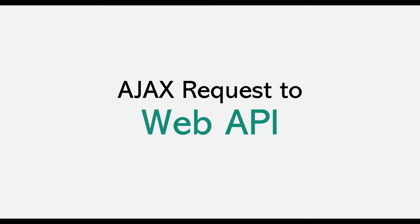In the last lecture, we learned how to make an AJAX call to request some data from a server asynchronously using the XMLHttpRequest object. The data which we requested was present in the same server where our web project resides. We requested data from the index.html file and the data was sent by the products.json file, and both these files were present in the same local server.